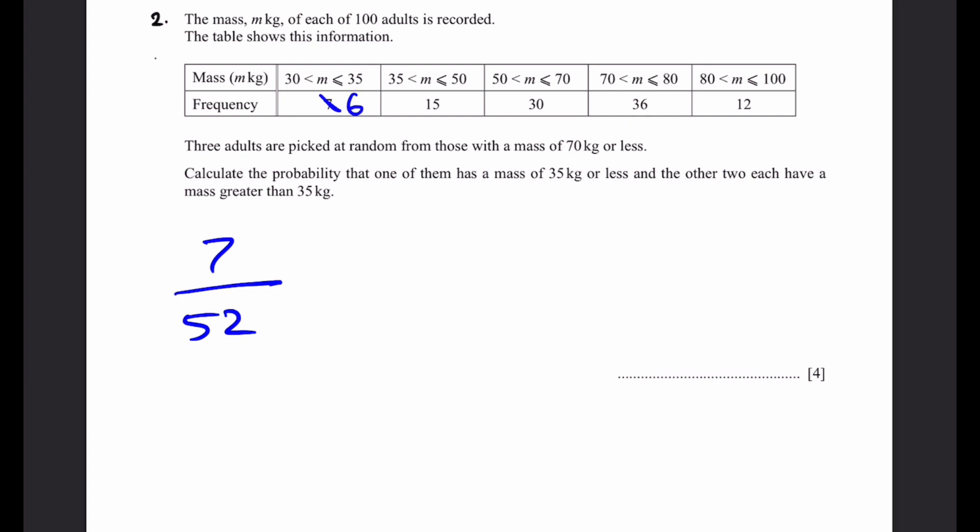So our second person is going to be 45, because that's the frequency which we have, divided by 51, because we've already selected one person. 45 divided by 51. Now we minus 1 from this 45 here to get 44, and we minus 1 from 51 to get 50 people remaining to select in the 70 or less group.